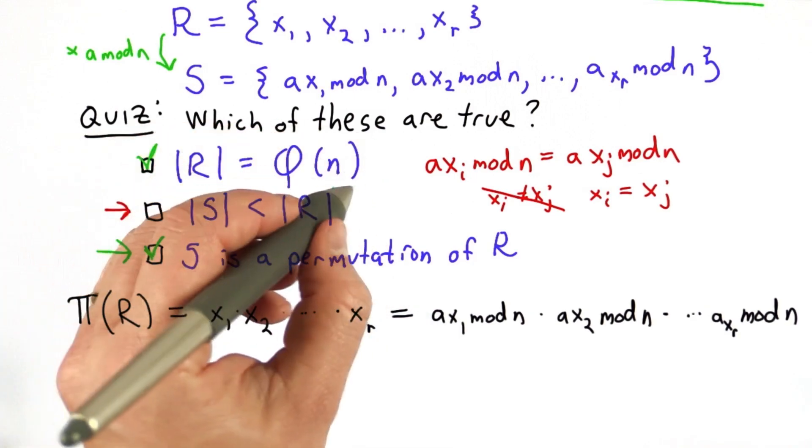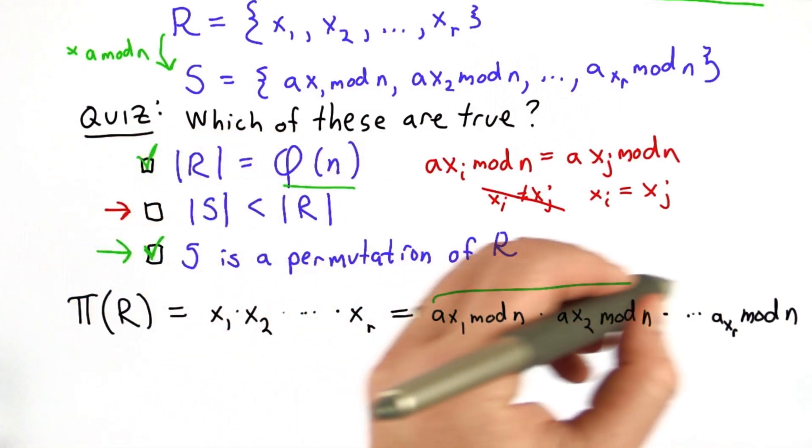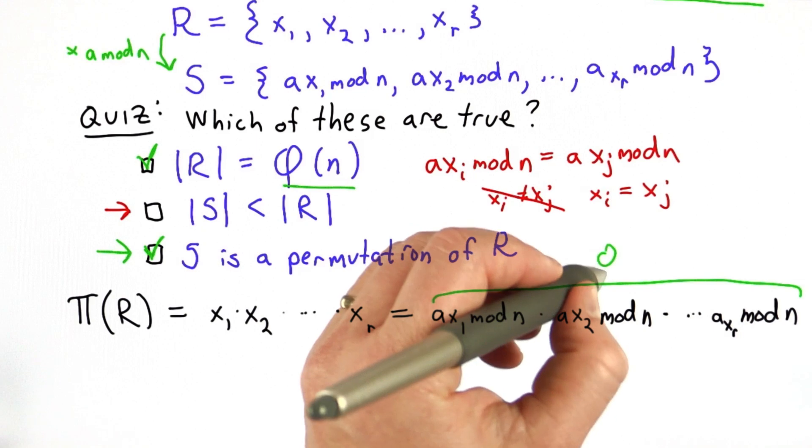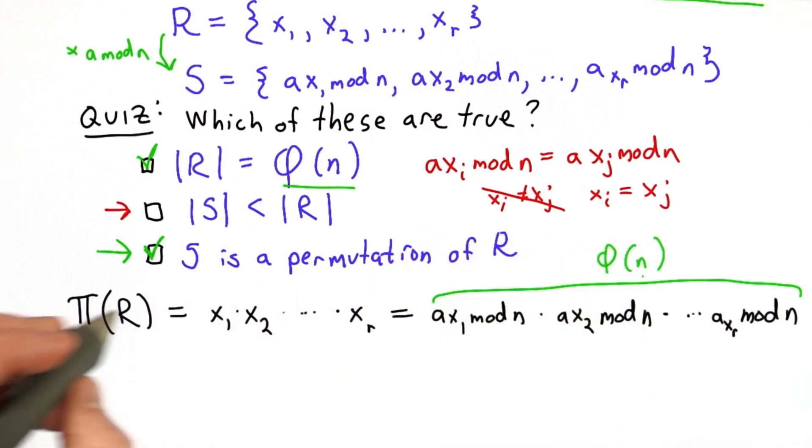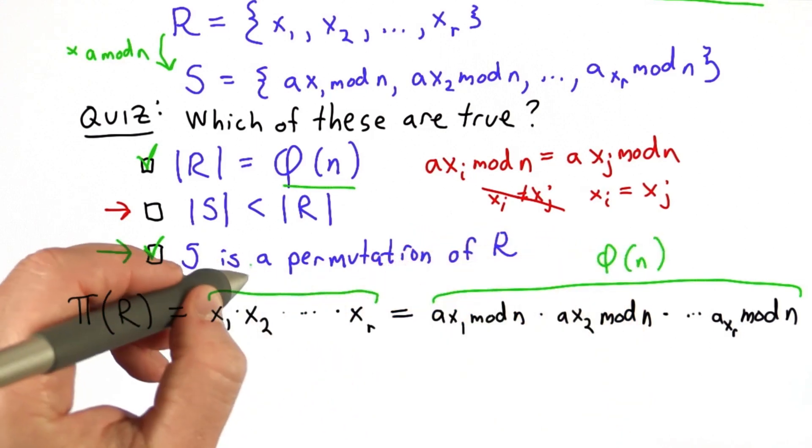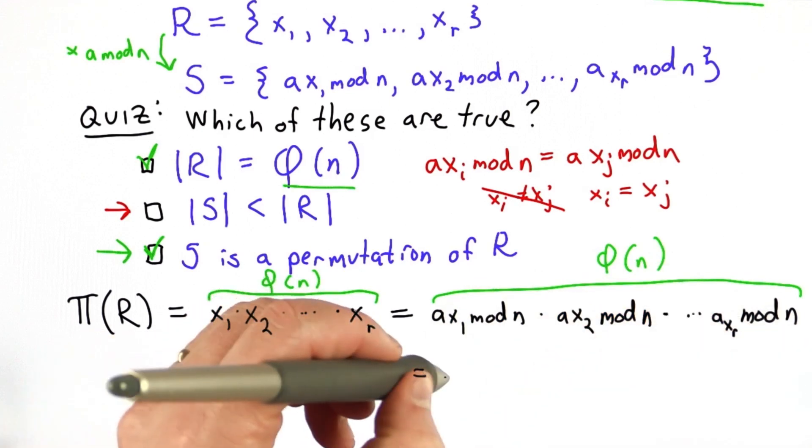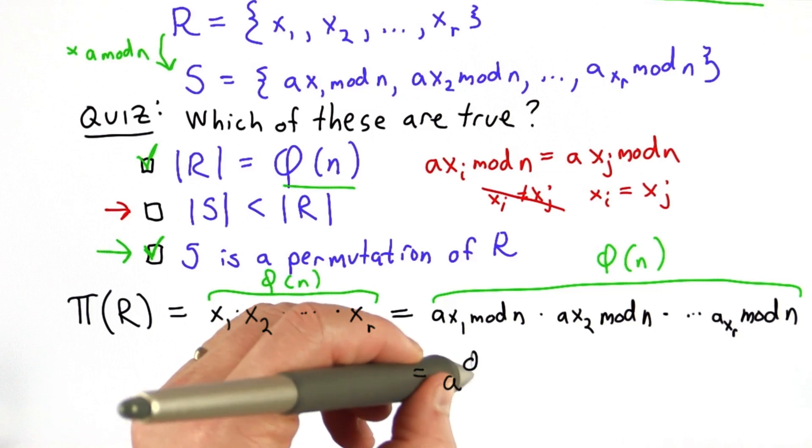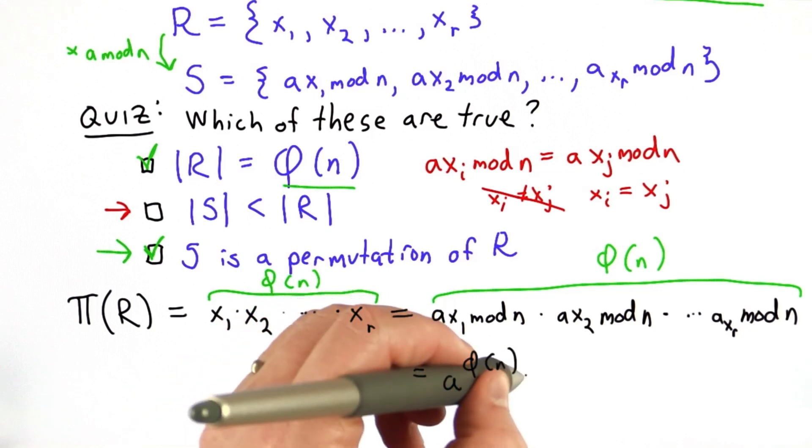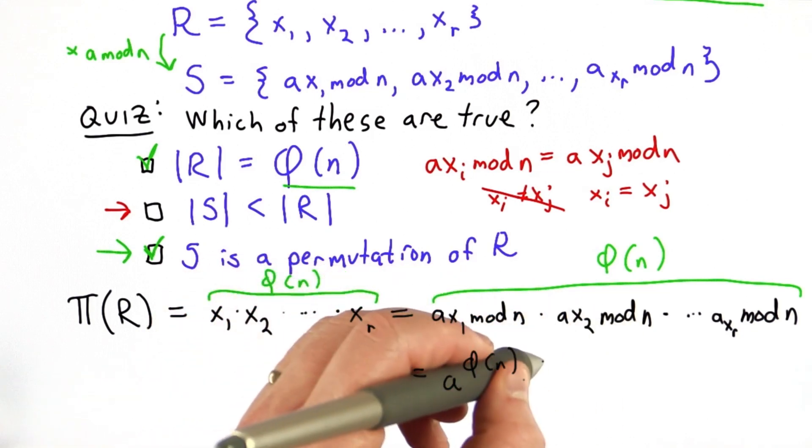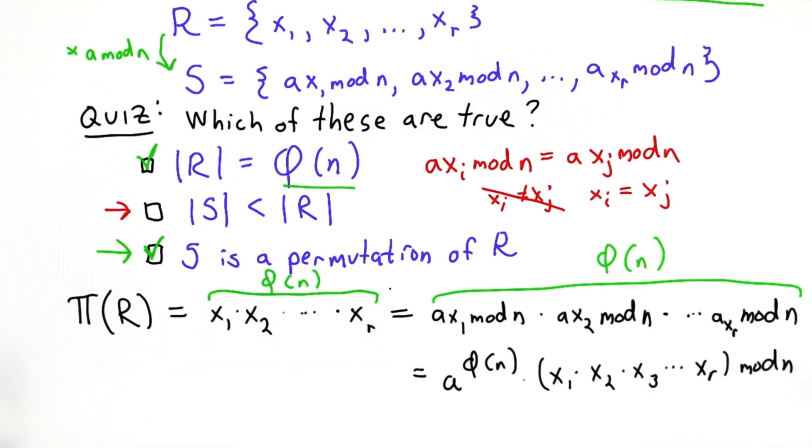We also know from this property that the number of terms is the totient of n. That's true on both sides. So that means we can separate out the a's from the x's. We're going to have a to the totient of n power times all the x's, still equal to this product.